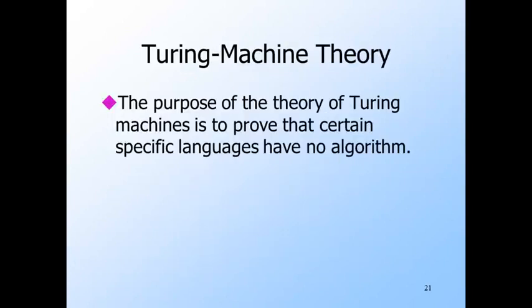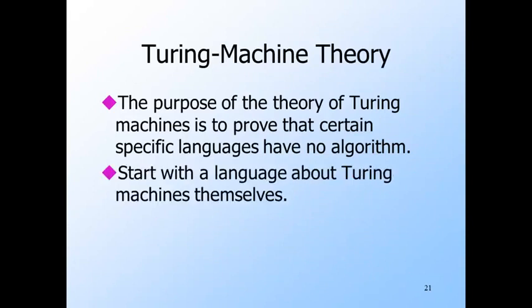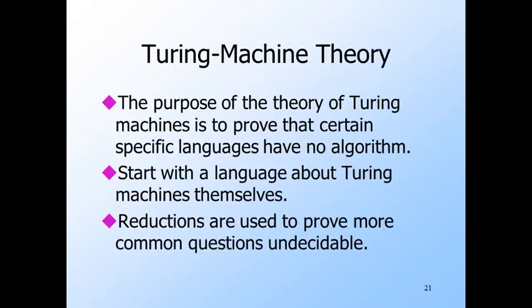We're now ready to look at the theory of Turing machines. One important purpose of this theory is to prove certain particular languages have no membership algorithm. The first step is to prove certain languages about Turing machines themselves have no membership algorithms. We then introduce the important notion of a reduction from one problem to another — proofs of the form: if there's an algorithm for problem P, then there is an algorithm for problem Q. We draw this as Q is reduced to P. If we already know there's no algorithm for Q, then there can't be one for P either. By use of reductions, we don't have to resort to diagonalization to prove that P has no algorithm.